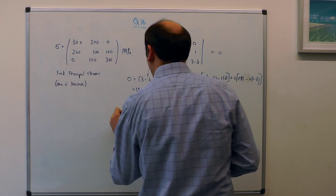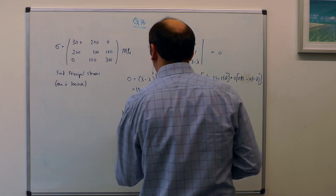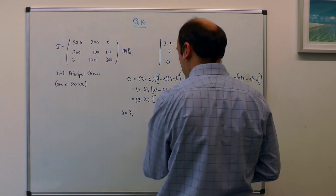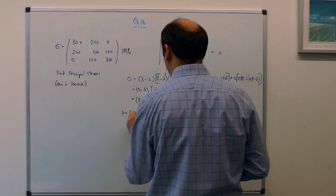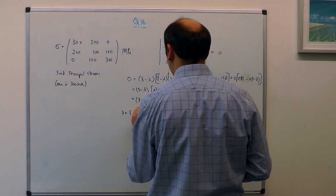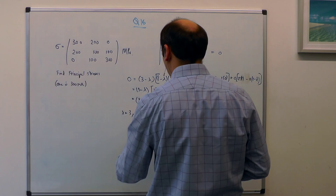So lambda is equal to 3, or it's the solution to this quadratic, which is minus b over 2a, so that's 4 over 2, plus minus the square root,